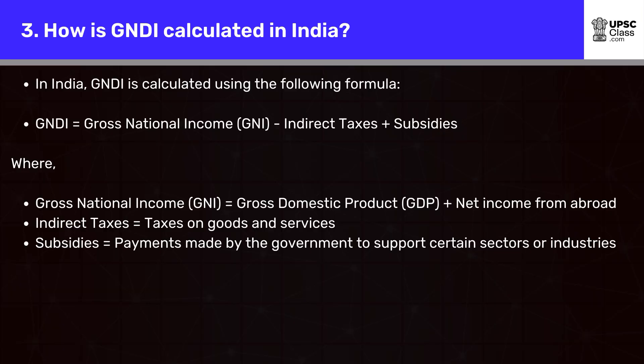How is GNDI calculated in India? In India, GNDI is calculated using the following formula: GNDI = Gross National Income (GNI) − Indirect Taxes + Subsidies, where GNI = Gross Domestic Product (GDP) + Net Income from Abroad. Indirect Taxes = Taxes on Goods and Services. Subsidies = Payments made by the government to support certain sectors or industries.